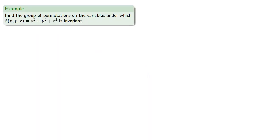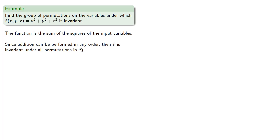For example, let's find the group of permutations on the variables under which f of x, y, z equals x squared plus y squared plus z squared is invariant. The function is the sum of the squares of the input variables. Since addition can be performed in any order, then f is invariant under all permutations in S3.